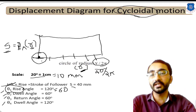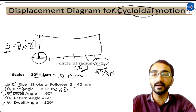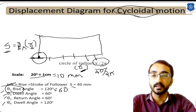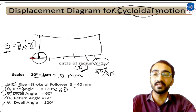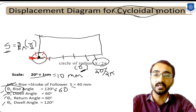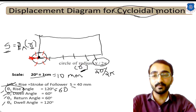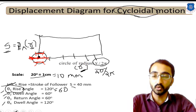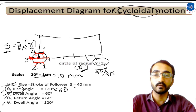Divide the circle into 6 equal intervals. Starting from the initial contact point, use the radius as the arc length to step off divisions around the circle — giving first, second, third, fourth, fifth, and sixth divisions. Extend these division lines horizontally to obtain three horizontal lines. Label these divisions 1 through 6.